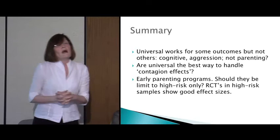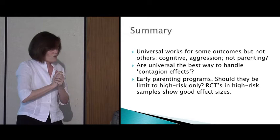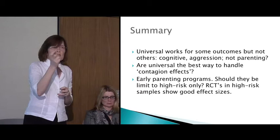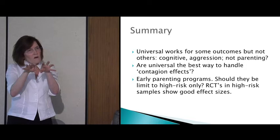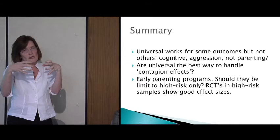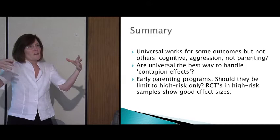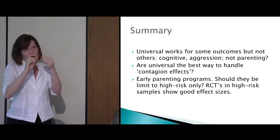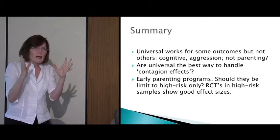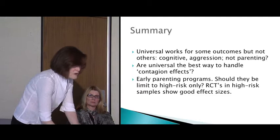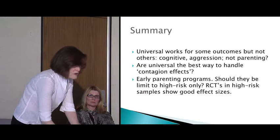So some thoughts: universal works for some outcomes but not others. We're seeing good effects when looking at school-related things for children in both cognition and aggression. Is universal a way to handle contagion effects? We now know that the higher the proportion of children in a classroom with a problem, the more problematic it is for other kids who don't have that problem — there is a documented contagion effect for things like poor language and aggression. So perhaps universal programs work best on outcomes where you get contagion effects, and less well for parenting programs.